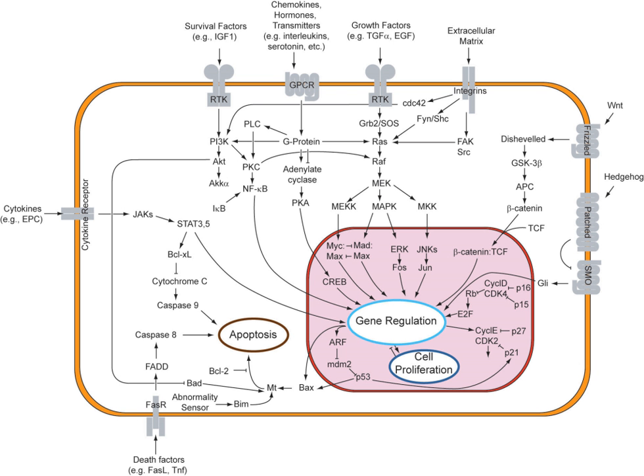In diseases, proteins that interact with receptors are often aberrantly activated, resulting in constitutively activated downstream signals. For several types of intercellular signaling molecules that are unable to permeate the hydrophobic cell membrane due to their hydrophilic nature, the target receptor is expressed on the membrane. When such a signaling molecule activates its receptor, the signal is carried into the cell usually by means of a second messenger such as cAMP.